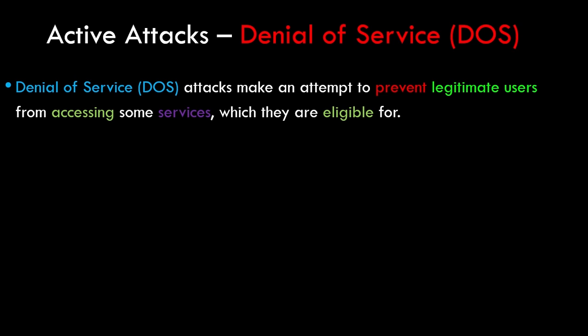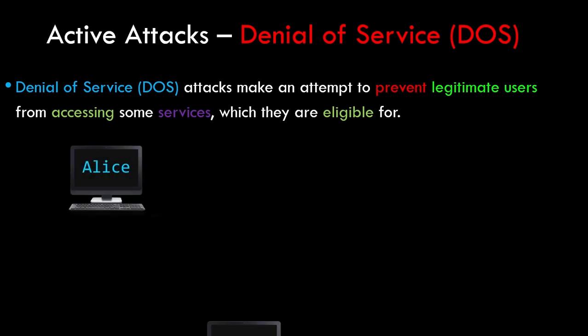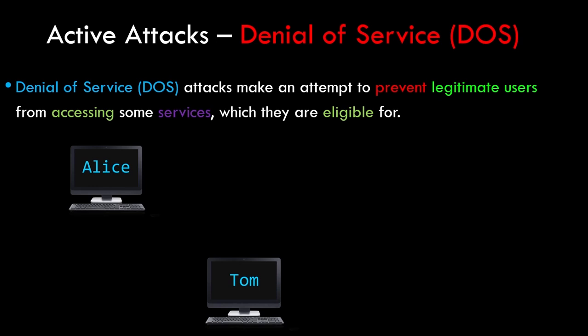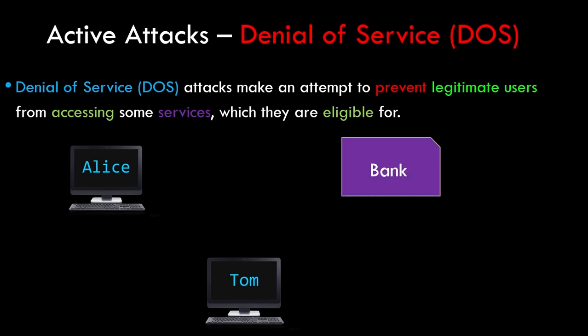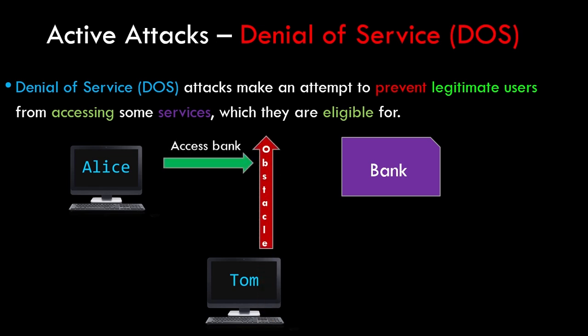The next type of active attack is denial of service. A denial of service attack makes an attempt to prevent legitimate users from accessing services they are eligible for. For example, Alice is a legitimate user of her XYZ bank who wants to access her account and withdraw some money. Tom, a hacker, renders the network services down and jams the network, creating an obstacle. As a result, the bank is unable to provide service to Alice. This is an example of a denial of service attack.